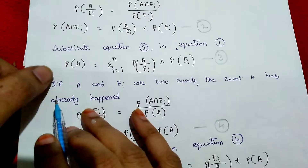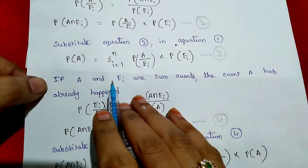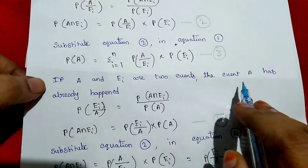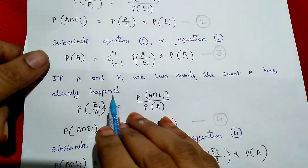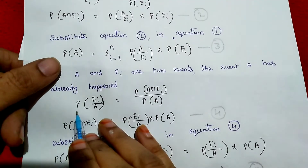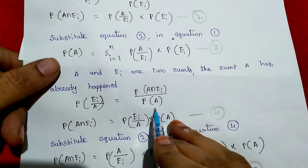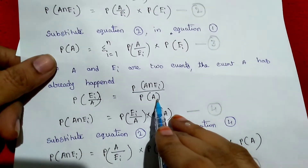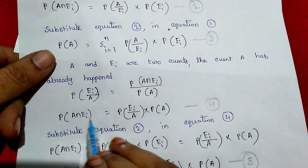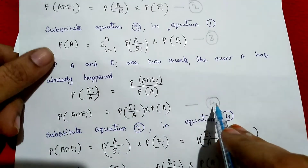Next, we apply conditional probability again. If A and EI are two events and event A has already happened, then A is in the denominator. So probability of EI given A equals probability of A intersection EI divided by probability of A. Rearranging, probability of A intersection EI equals probability of EI given A times probability of A. This is equation 4.